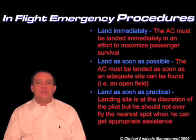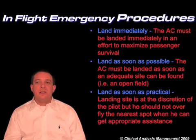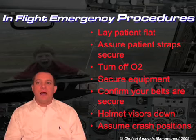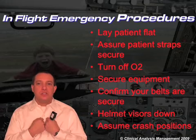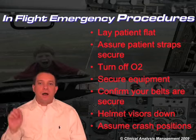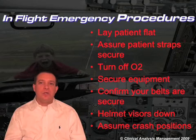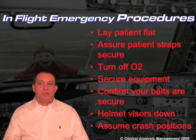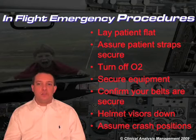If your pilot tells you on the ICS that you're going to have an emergency landing, remember the priorities. First, get your patient lying flat. Make sure your patient is strapped in well. If you've got oxygen flowing — which we almost always do — turn your oxygen off. Secure any loose equipment, make sure your seatbelts are on, make sure your helmet visor is down. And then assume a crash position.